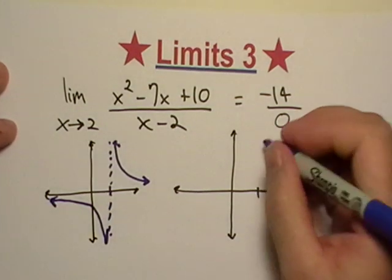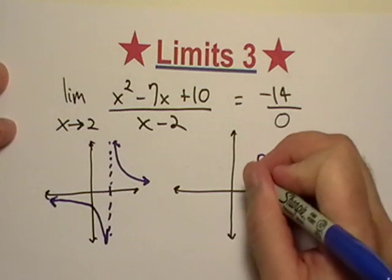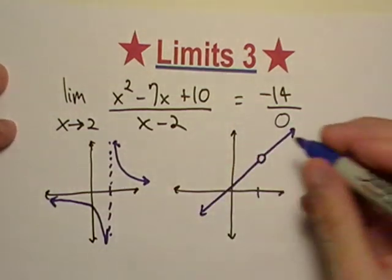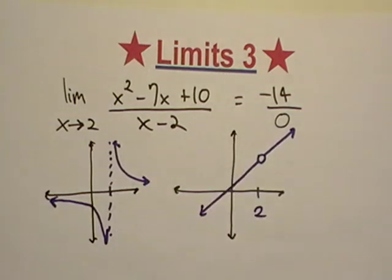But it's also possible that we might have just a line with a hole in it. It just happens that at 2, it's undefined there. So what you'll probably want to do is just go ahead and factor this thing out.